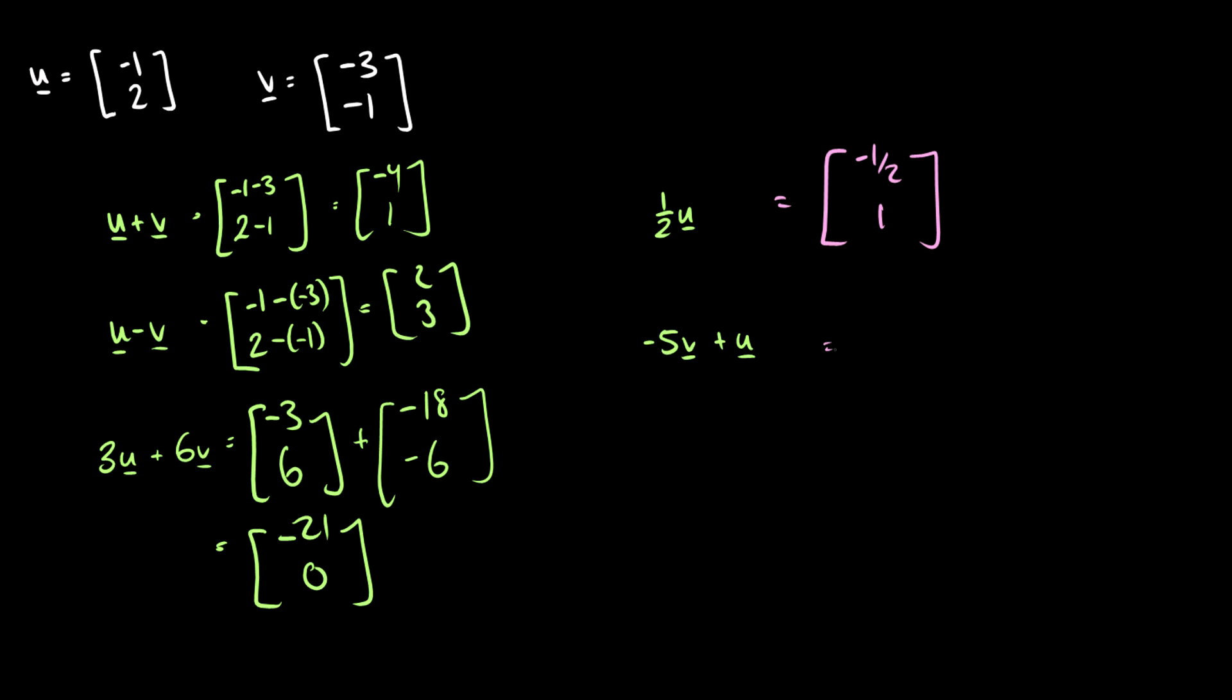What about negative 5v plus u? So this will be negative 5 times v. So negative 3 times negative 5 is 15. Negative 1 times negative 5 is 5. And then we have to add u. So then we end up at 14 and 7. So you can draw these out on a graph and make sure that these are right to prove to yourself that you know how vector addition and multiplication works while drawing vectors.